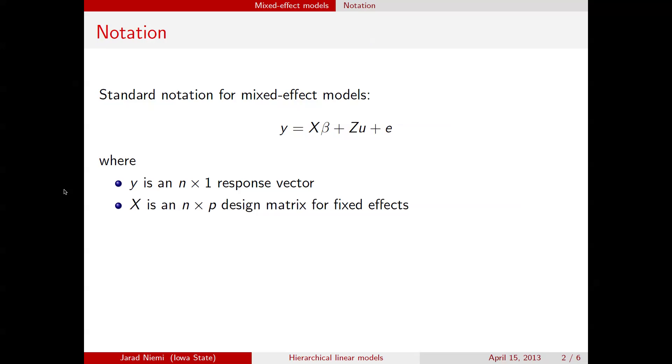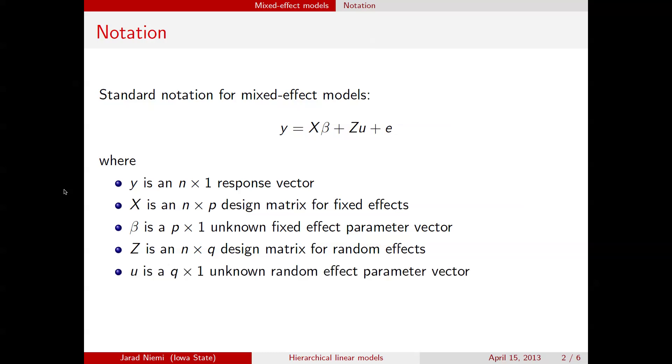We have X is an n by p design matrix for the fixed effects, and therefore beta itself is a p by 1 unknown parameter vector, but we're considering beta as being fixed. Z is an n by q design matrix, now for the random effects, so u is a q by 1 parameter vector, but these are the random effects, and therefore they're not fixed. Again, this is from a non-Bayesian perspective.